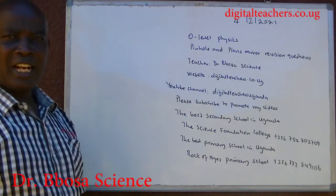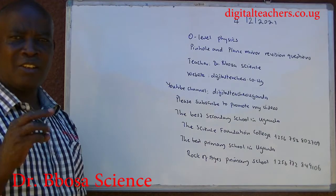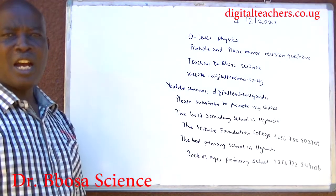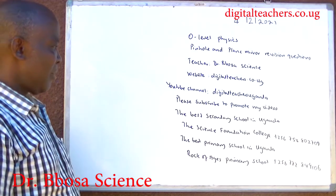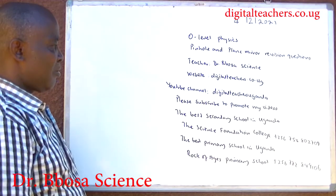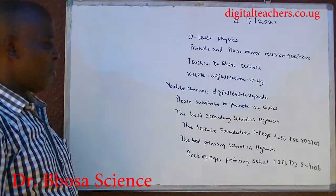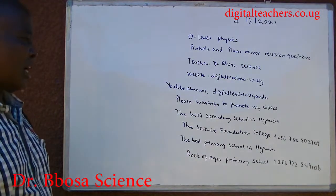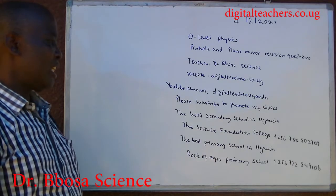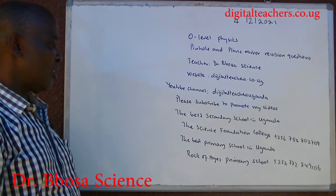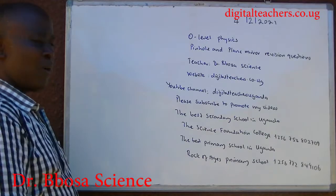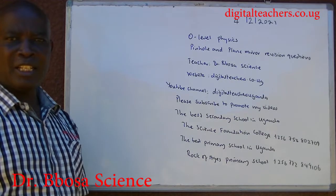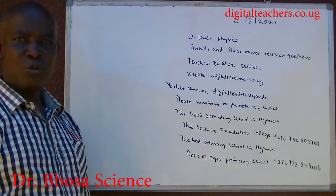You will be given categories of videos in physics, chemistry, biology, math and primary subjects. Please subscribe to promote my videos. The best secondary school in Uganda is the Science Foundation College. The best primary school in Uganda is the Locke of Ages primary school.